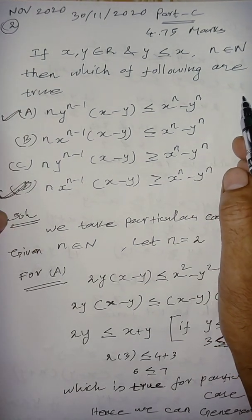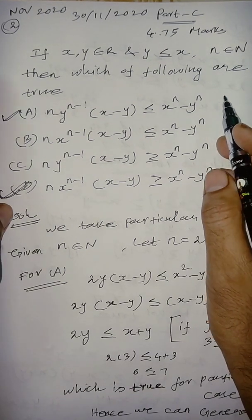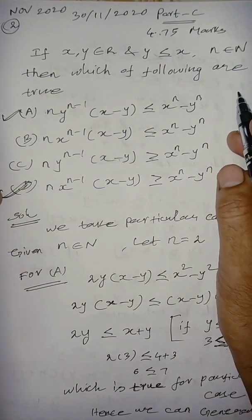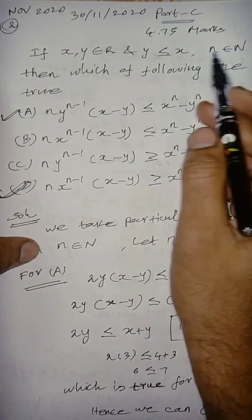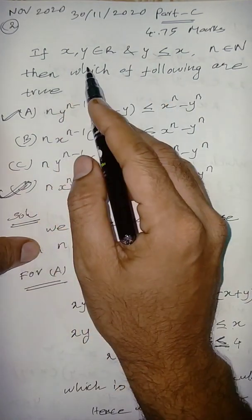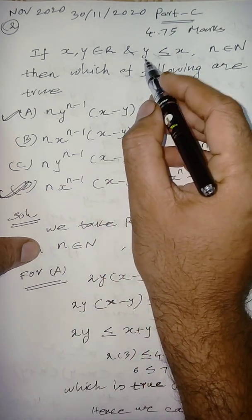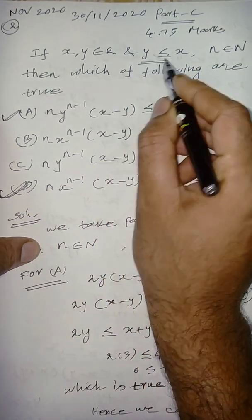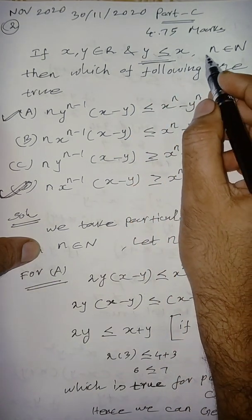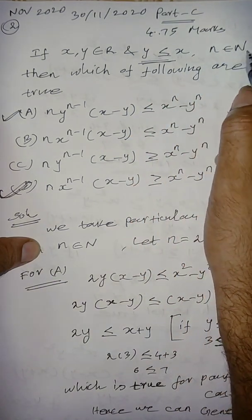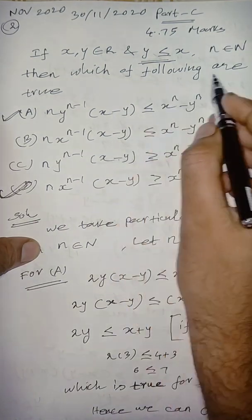This is a question asked in part C. You can get easy 4.75 marks if x, y belongs to R, real number. Moreover, this relation is given, that is, y less than or equal to x^n, n small n is integer, then which one are the following?